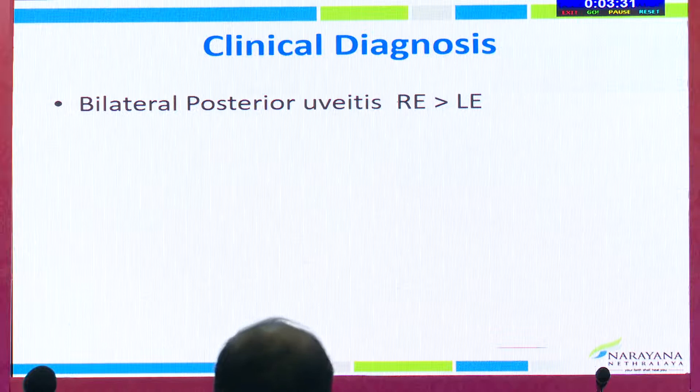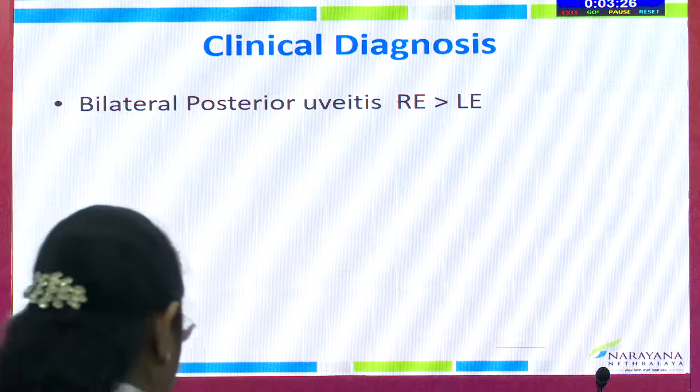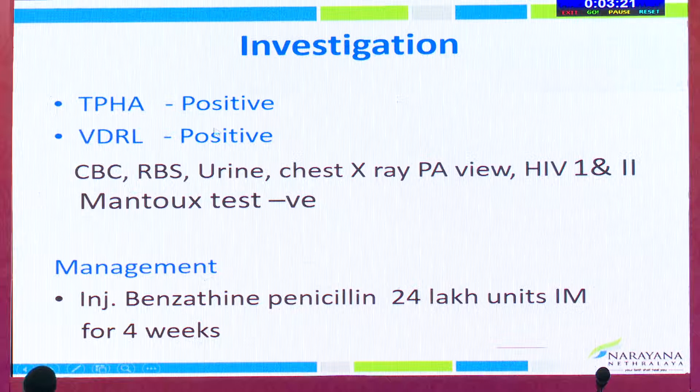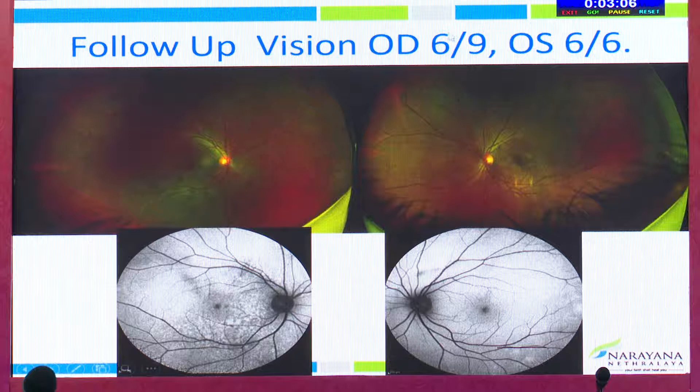In this patient with bilateral posterior uveitis, right eye more than left, in view of the triangular pattern of retinitis in the left eye, I suspected syphilis. Both TPHA and VDRL came positive; other investigations were all negative. We managed this patient with injection benzathine penicillin 24 lakh units IM for four weeks. On follow-up, there was complete resolution of retinal opacification and improvement of visual acuity to 6/9 and 6/6. It is important that we pick up infectious uveitis, as appropriate antimicrobial therapy results in improvement of visual acuity and restoration of vision.